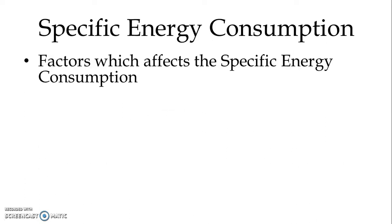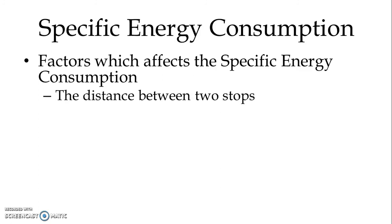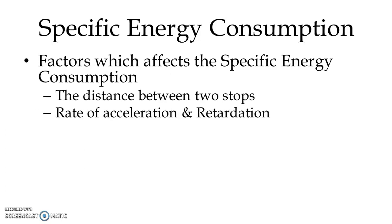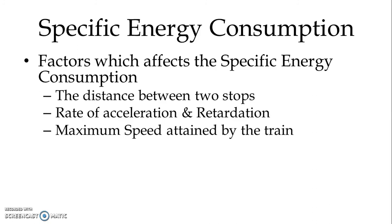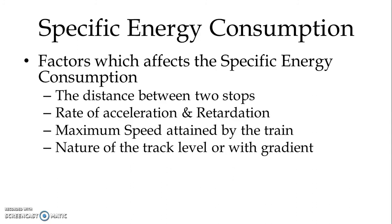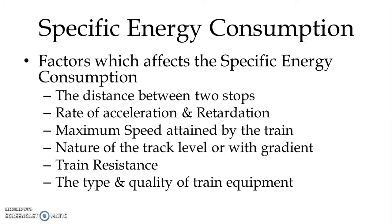Now let us discuss certain factors which affect the specific energy consumption. The first factor is the distance between two stops. The second is the rate of acceleration and retardation. Third is the maximum speed attained by the train. Fourth is the nature of the track — level or with gradient. Fifth is train resistance. And sixth is the type and quality of train equipment. Now let us discuss each factor in detail.